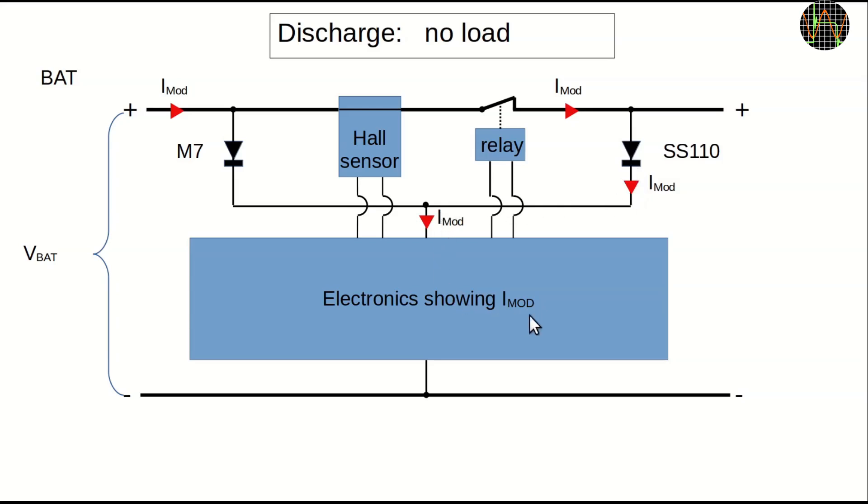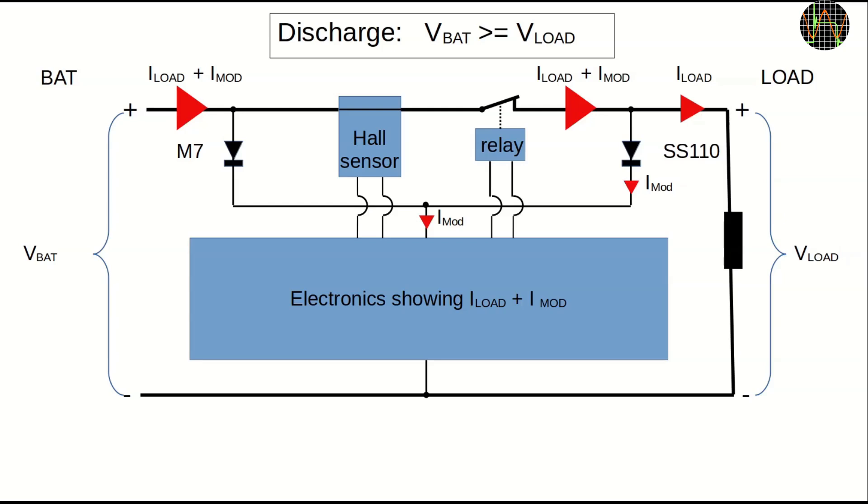This means the module now shows its own supply current on the display. If you keep this going for a long time, the battery will also be discharged but now the module keeps track and you can see what is left on the display. This basically stays the same if a load is connected except that now the load current is added. The battery now has to provide the load current and the module current and both are measured by the current sensor.